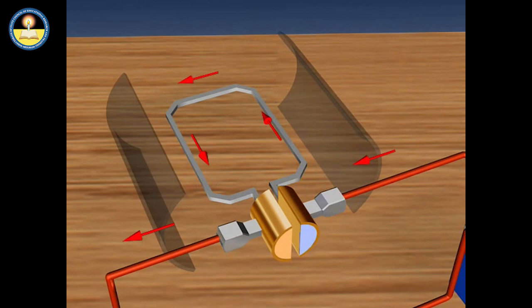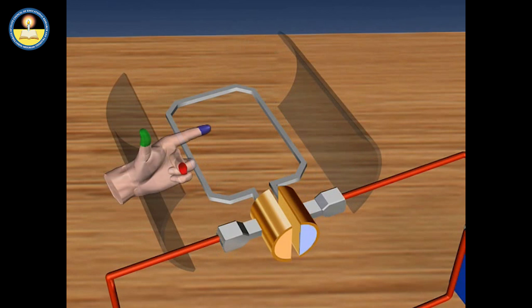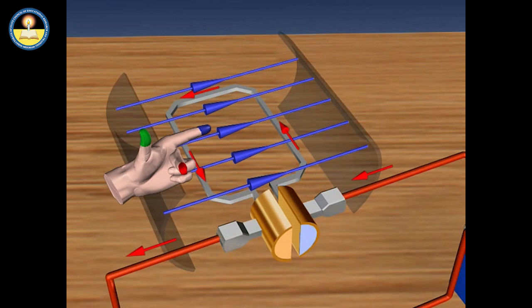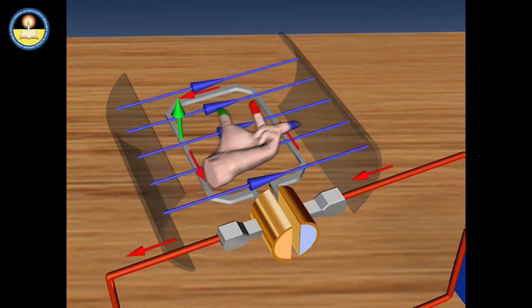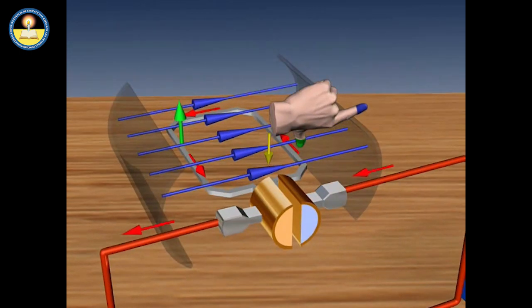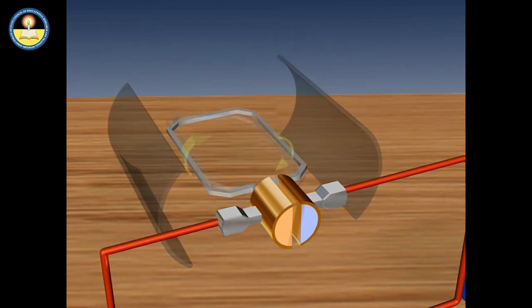Current is flowing through the coil in an anti-clockwise direction. When the current flows through the coil, a magnetic field is generated around the armature. The current in opposite arms of the coil are in opposite directions. On applying Fleming's left-hand rule, it can be seen that the force acting on the left arm pushes it upwards while the force acting on the right arm pushes it downward. Thereby, the coil and the axle rotate in the clockwise direction.